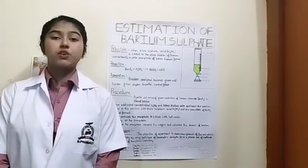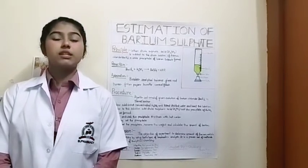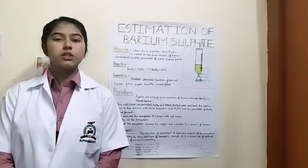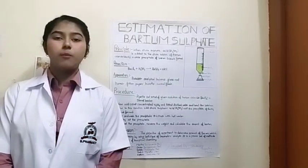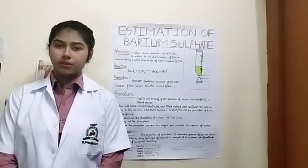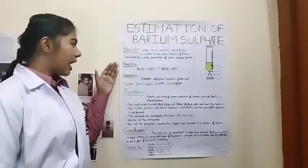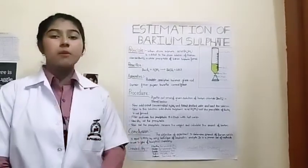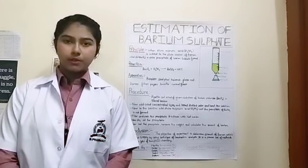So let's start with a basic question: what is estimation? Estimation is a calculation of a value, number, or quantity of any substance. Let's calculate the value, the number and the quantity of barium sulphate by Gravimetric Method. Here we have the principle, reaction, apparatus, procedure and conclusion, which will help us to know what is the process of this experiment.